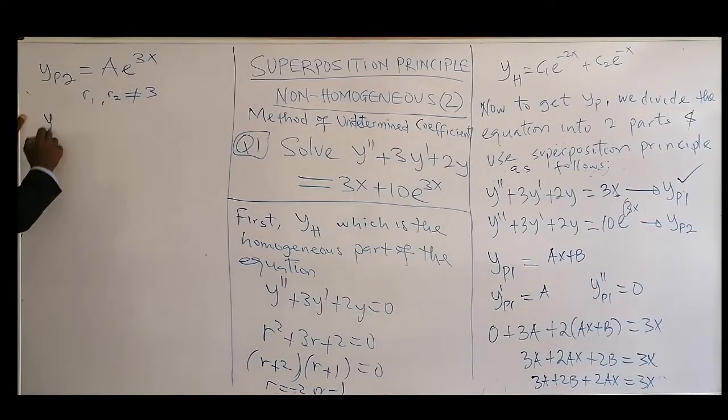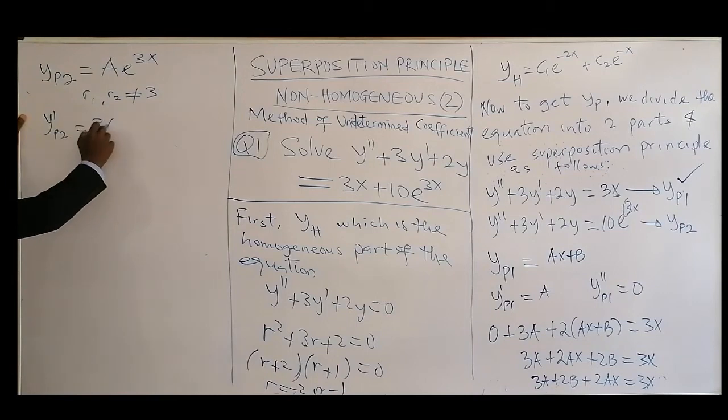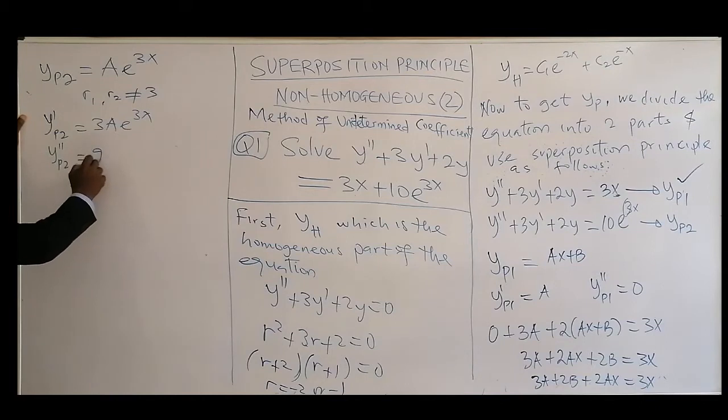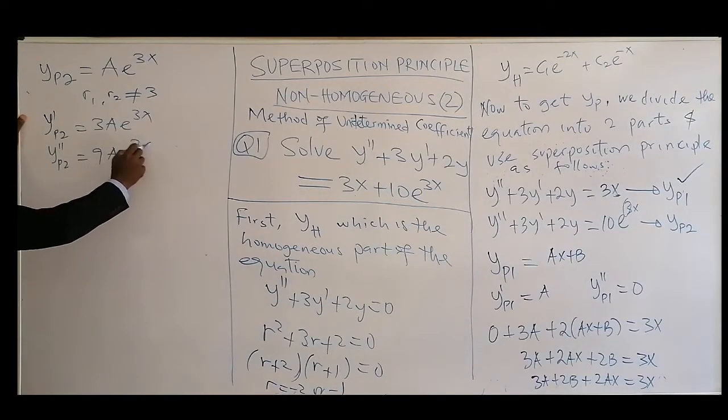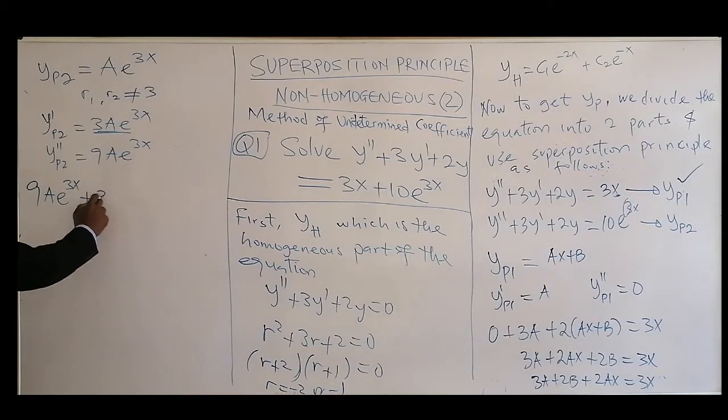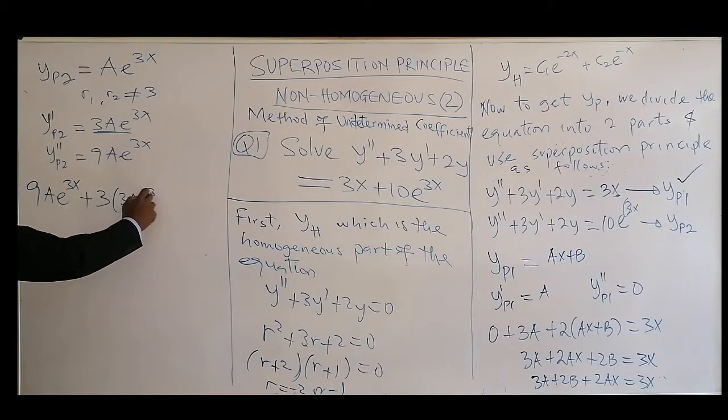So in that case, now we can have the first differential and then we go to the second differential. The second differential, that will be 9Ae^(3x), times 3 again here. That's the second differential.